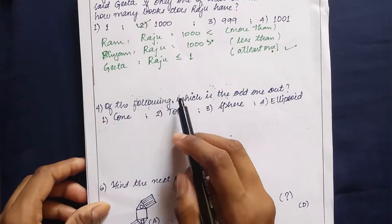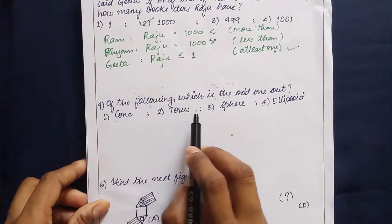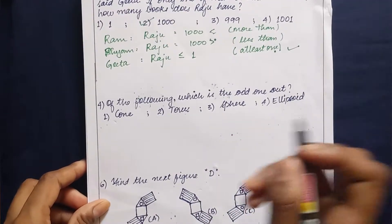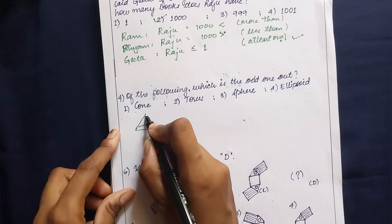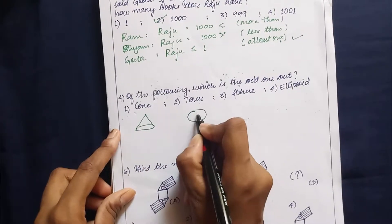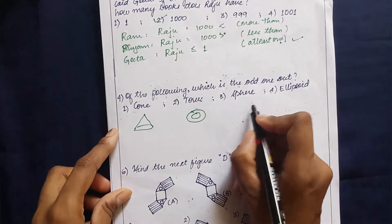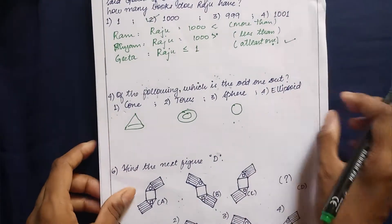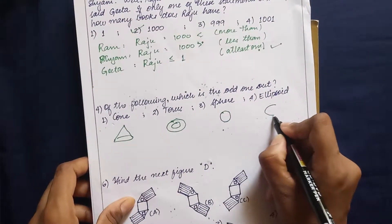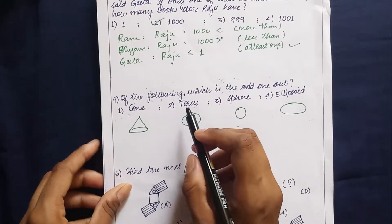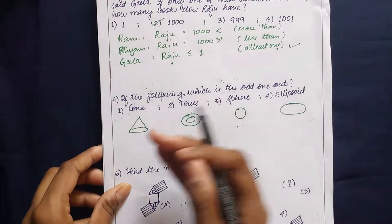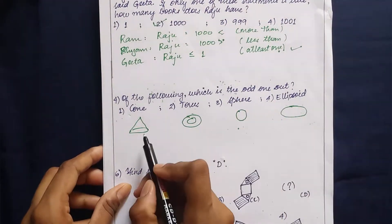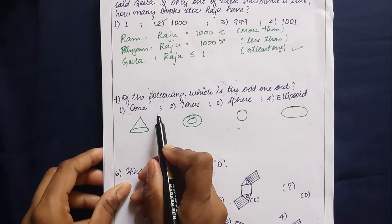Next question: of the following, which is the odd one out? Cone, torus, sphere, and ellipsoid. A cone is a pointed solid shape, a torus is a donut shape, a sphere is a spheroid, and an ellipsoid is an elliptical sphere. There are different ways this can be considered — this question can be solved in a subjective manner and the answer key has more than one answer that can be correct.